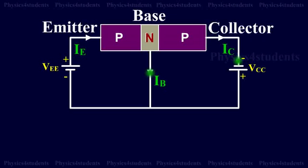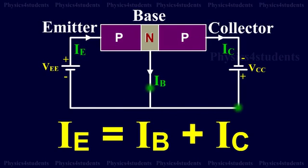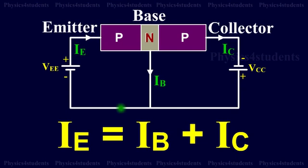Applying Kirchhoff's current law to the circuit, the emitter current is the sum of the collector current and the base current, i.e., IE = IB + IC. This equation is the fundamental relation between the currents in a transistor circuit and is true regardless of transistor type or configuration. The action of an NPN transistor is similar to that of a PNP transistor.